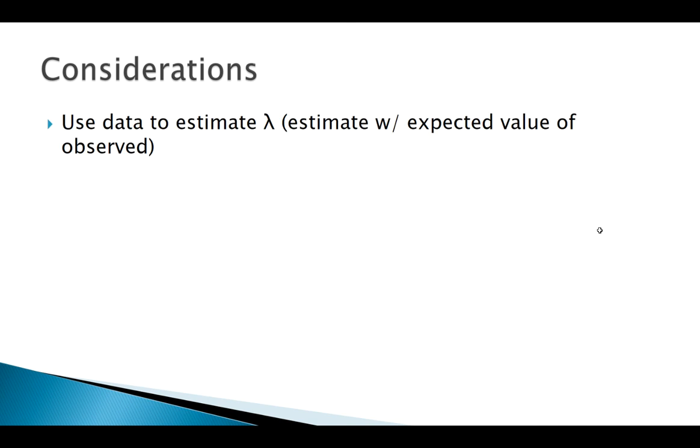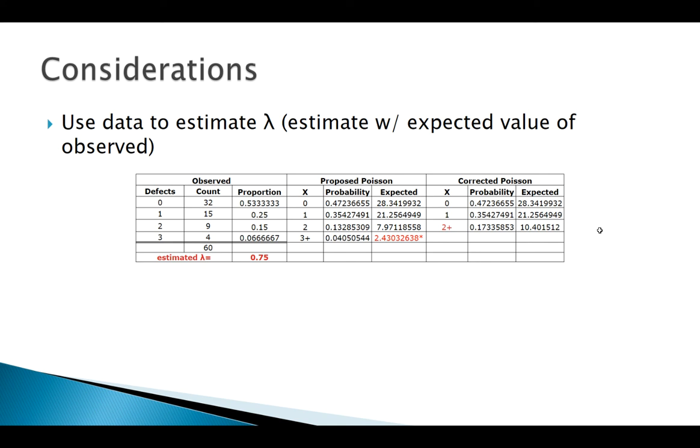Our null is going to be that it follows a Poisson, our alternative that it does not follow a Poisson, alpha 0.05. When coming up with this Poisson distribution, here are the things that I need to take in mind. I'm going to find the expected value of my data to estimate that lambda. So my number of defects, I have my observed counts here and the proportion. I'm going to use those proportions times a defect to come up with an expected value of 0.75. So let's try lambda 0.75. Using that lambda 0.75, I plug in and come up with these Poisson probabilities. Remember the Poisson distribution, x is unbounded on top, it's just something greater than or equal to zero.